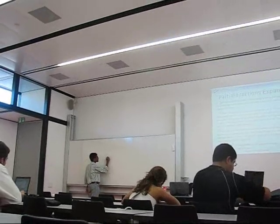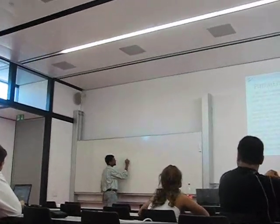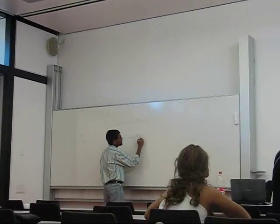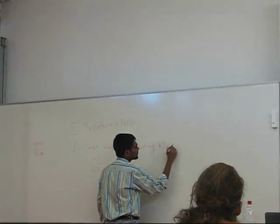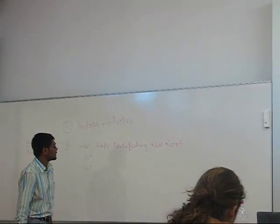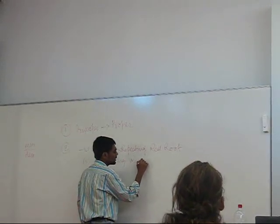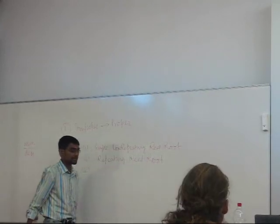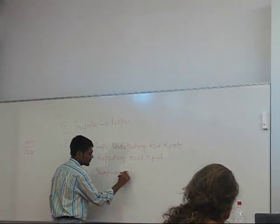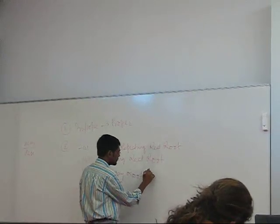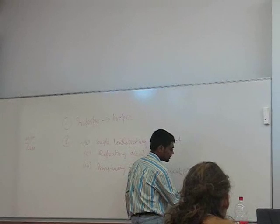There will be three options for the denominator. It can be simple non-repeating real roots. The second option could be repeating real roots. And the third will be imaginary roots — there is another term for this, you may call it irreducible quadratic function or expression.